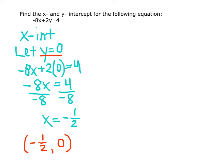Next, let's find our y intercept. So we let x equal 0. Again, plugging this into the equation, we have negative 8 times 0 plus 2y equals 4.